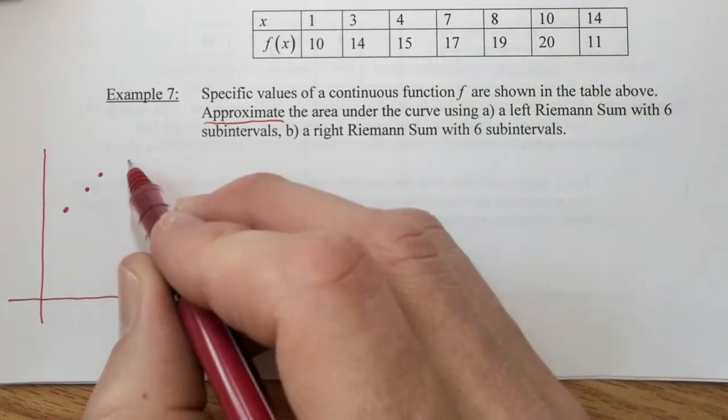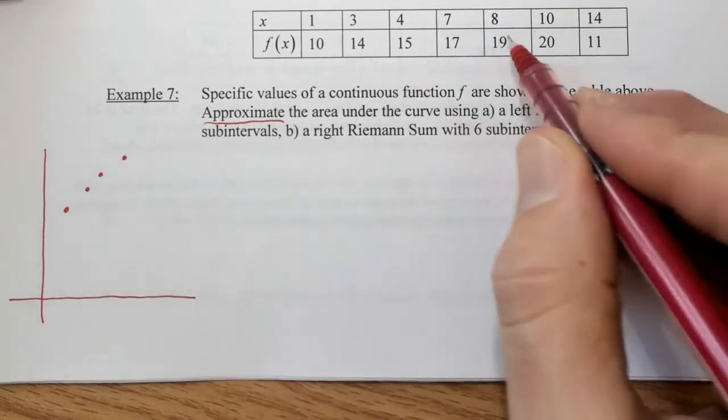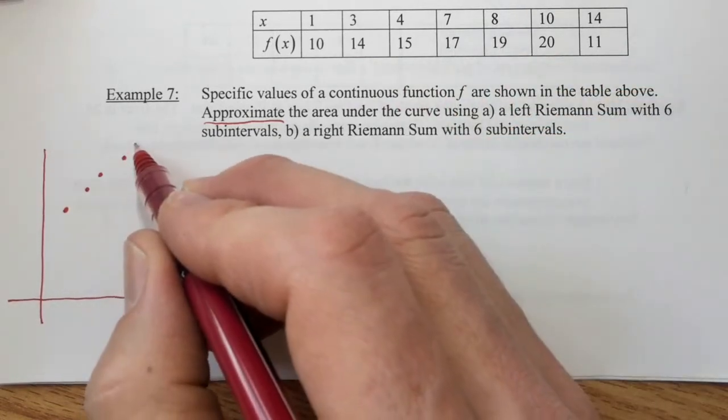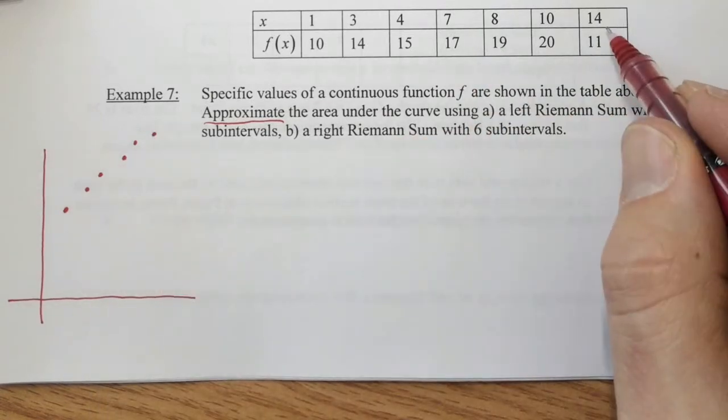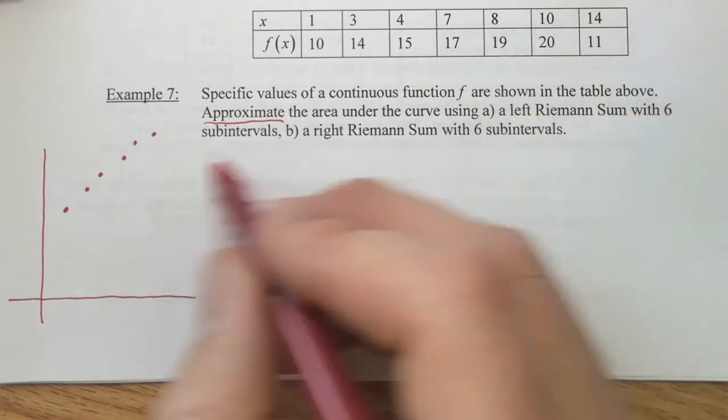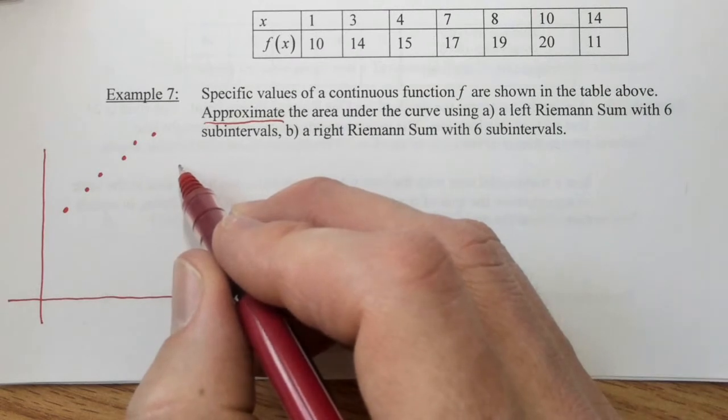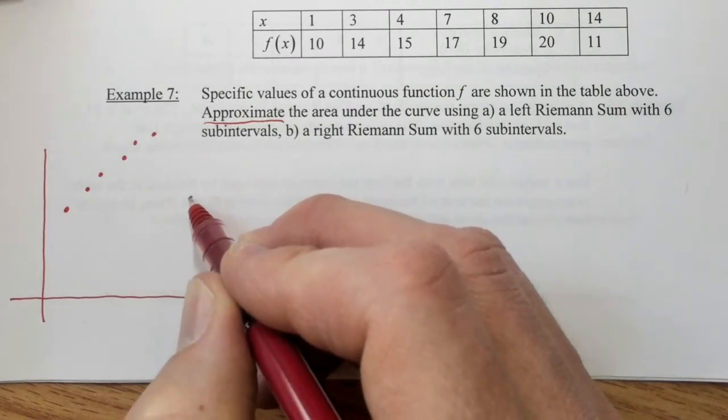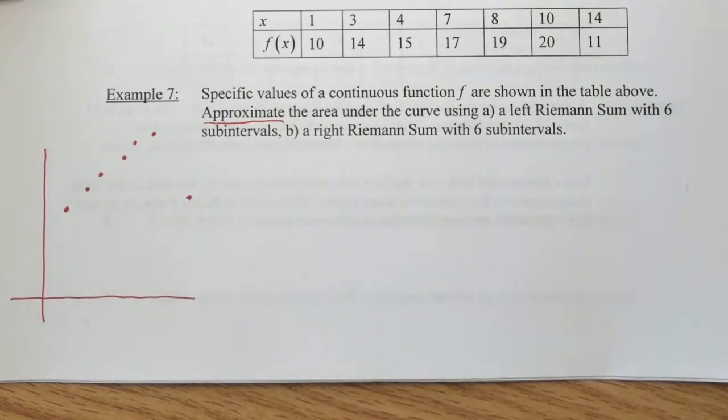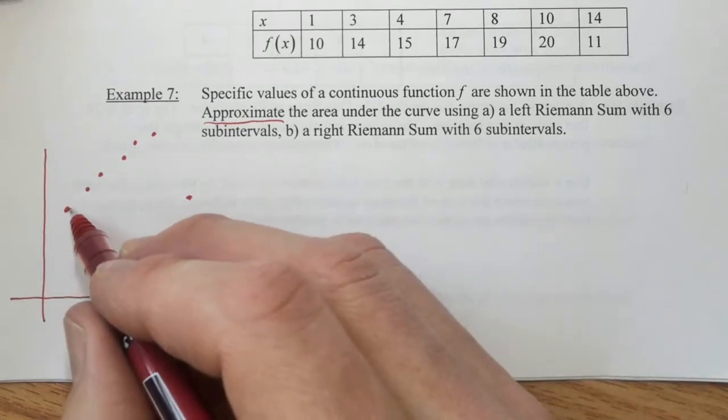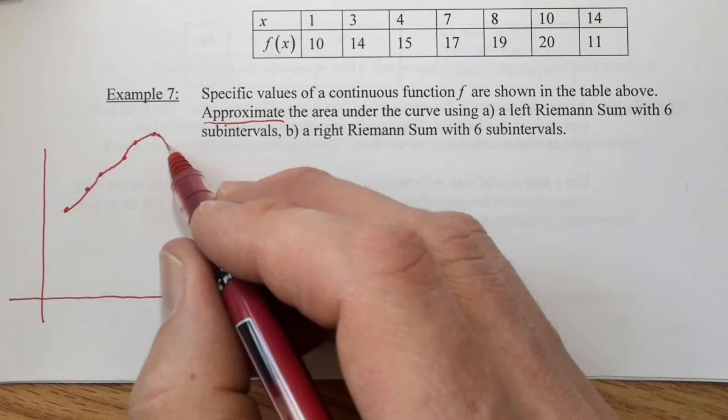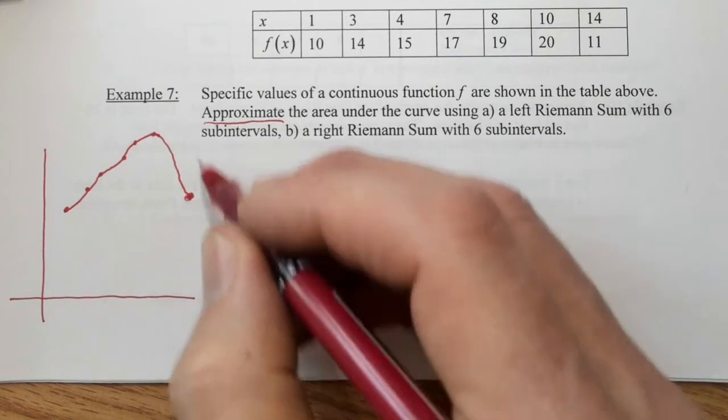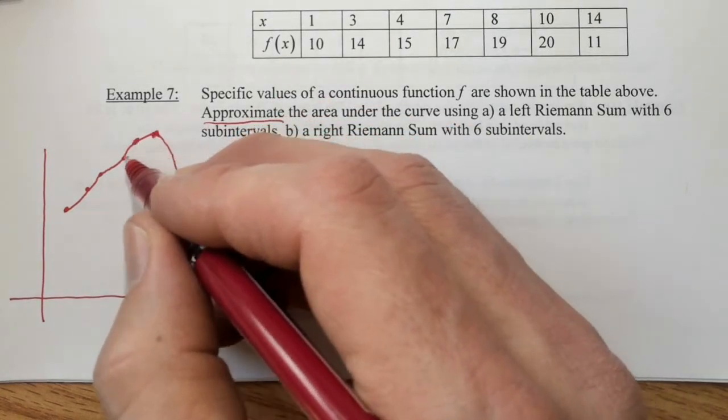Over seven, up seventeen, over eight, up nineteen, over ten, up twenty, and then over fourteen, up eleven. So we're back down here. We know this function is continuous, so we see that we have a graph which is doing something like so, and we're going through these data points right here.